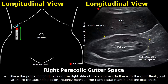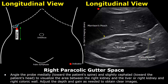Move the probe downwards and position it roughly between the right costal margin and the iliac crest to scan the right paracolic gutter space — the area around the inferior pole of the right kidney and the inferior margin of the liver. Free fluid may also be found in this region. You can angle the probe towards the patient's spine and slightly towards the patient's head to help locate the right paracolic gutter space.